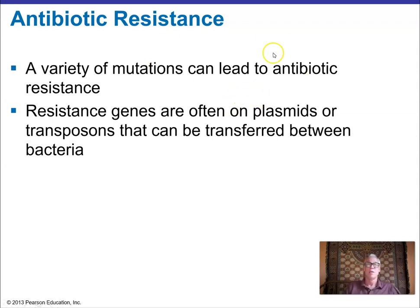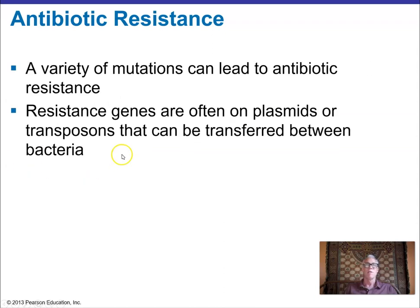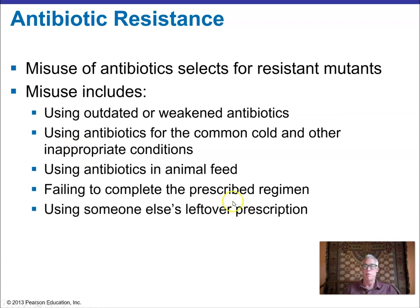Mutations and selection from among a population can lead to antibiotic resistance. Specific resistance genes can make microbes resistant, and these can be acquired through horizontal gene transfer via plasmids, transposons, or lysogeny. Plasmids often carry more than one resistance marker and can be transferred between bacteria, contributing to the multi-drug resistance problem.